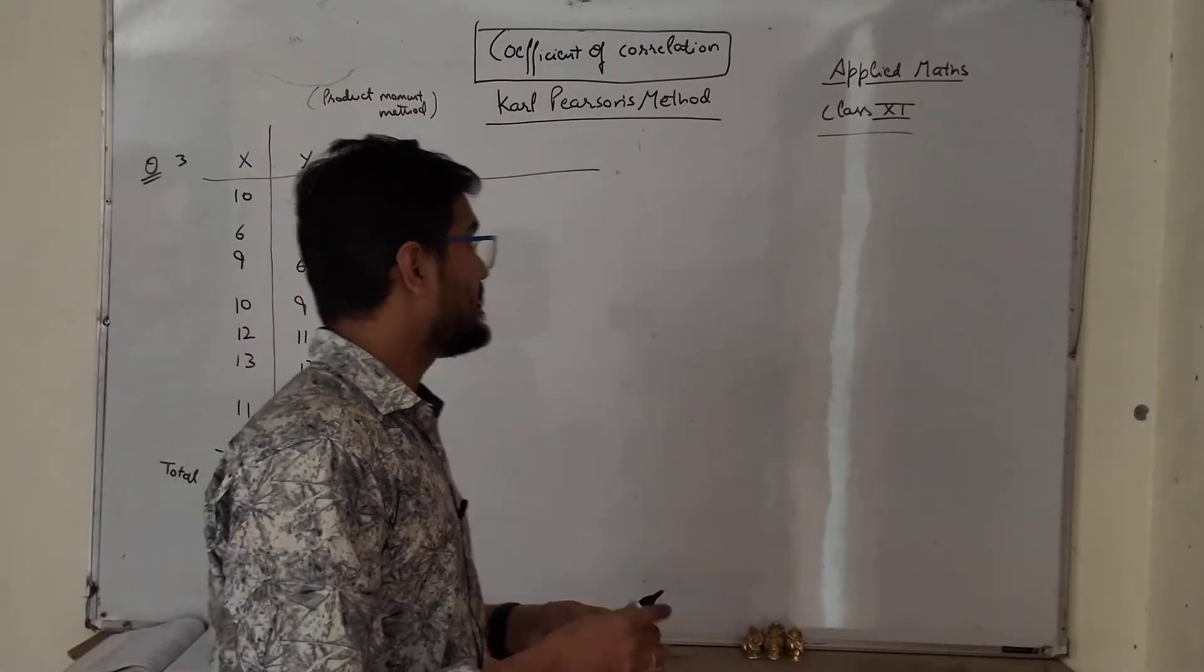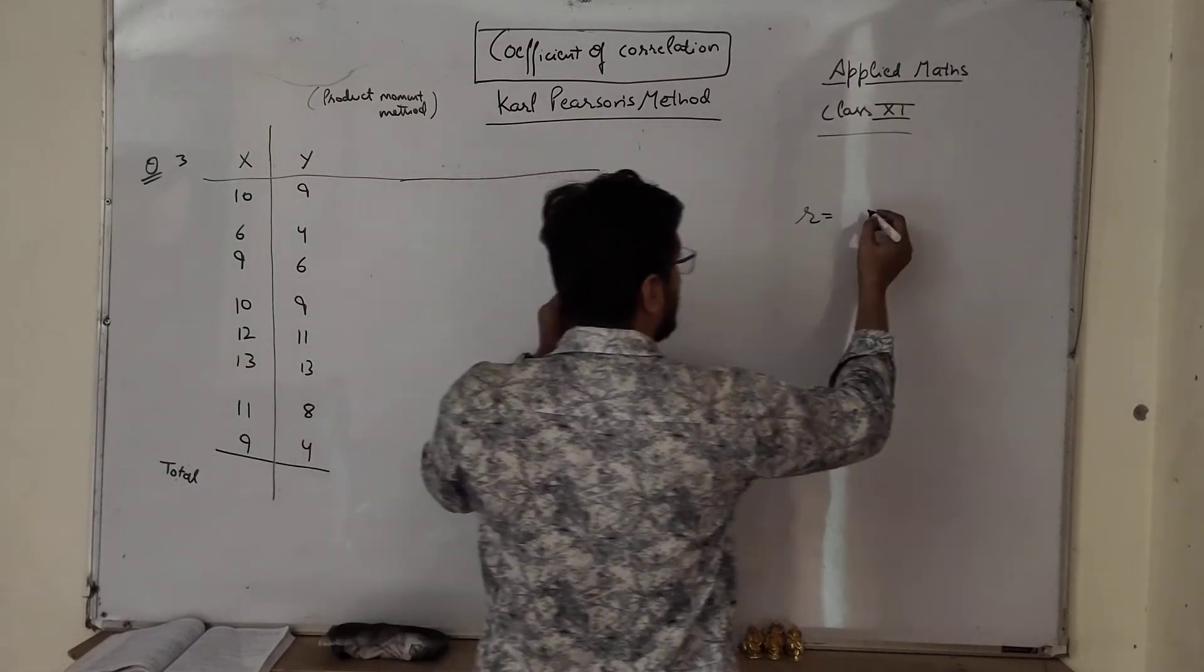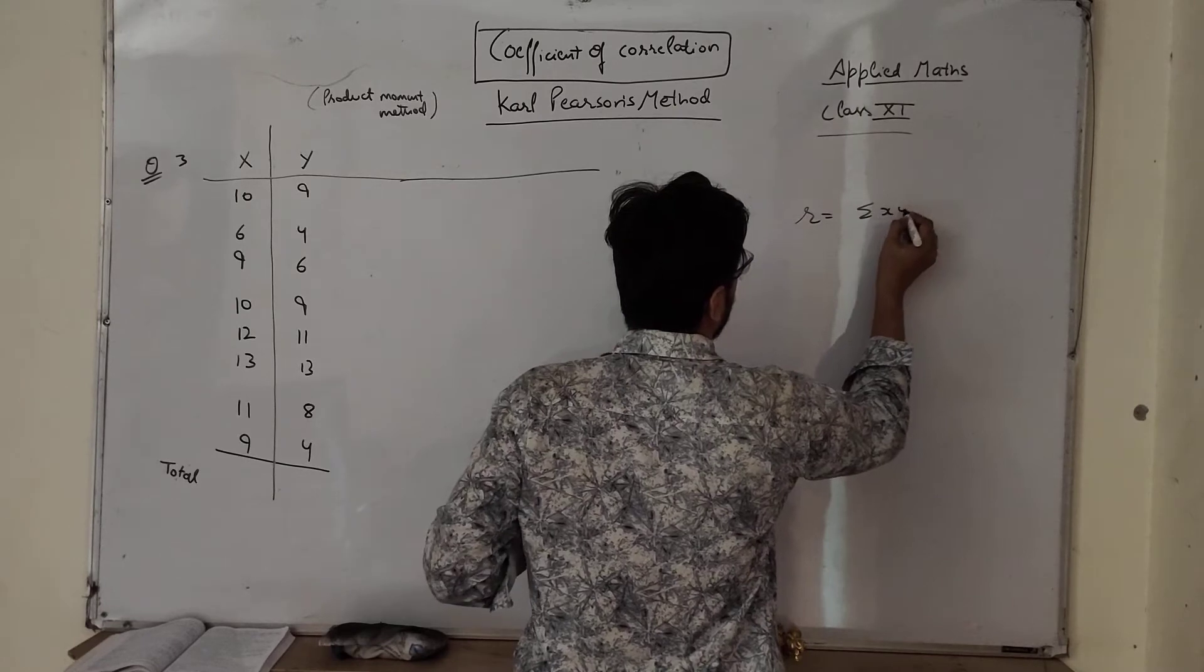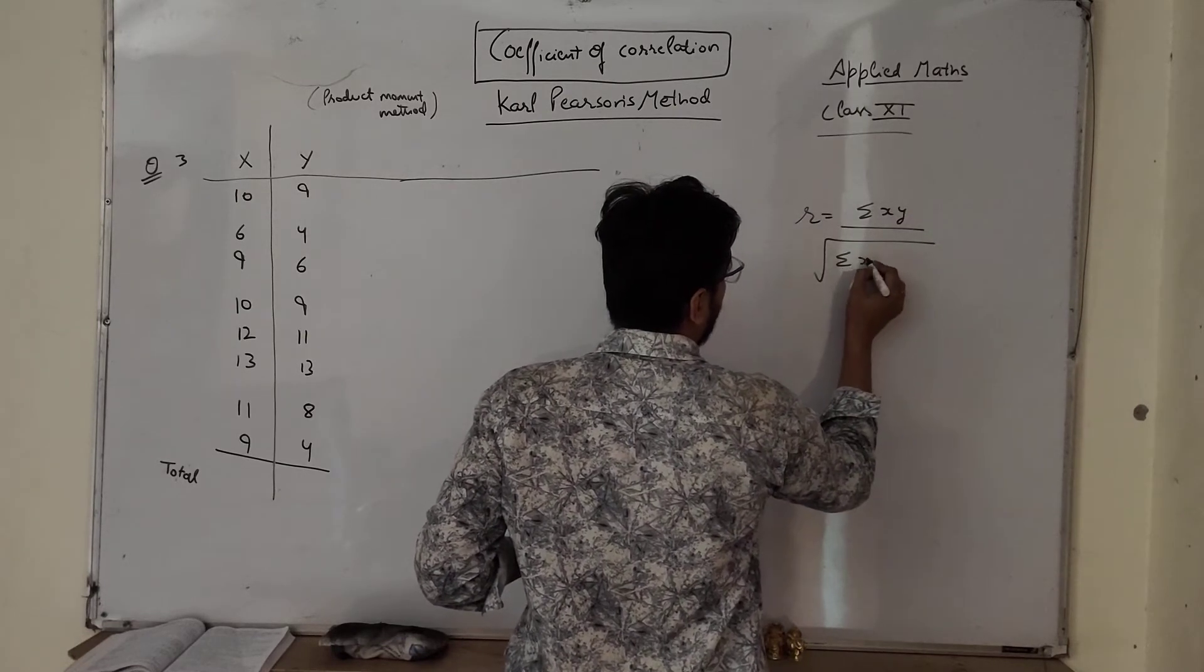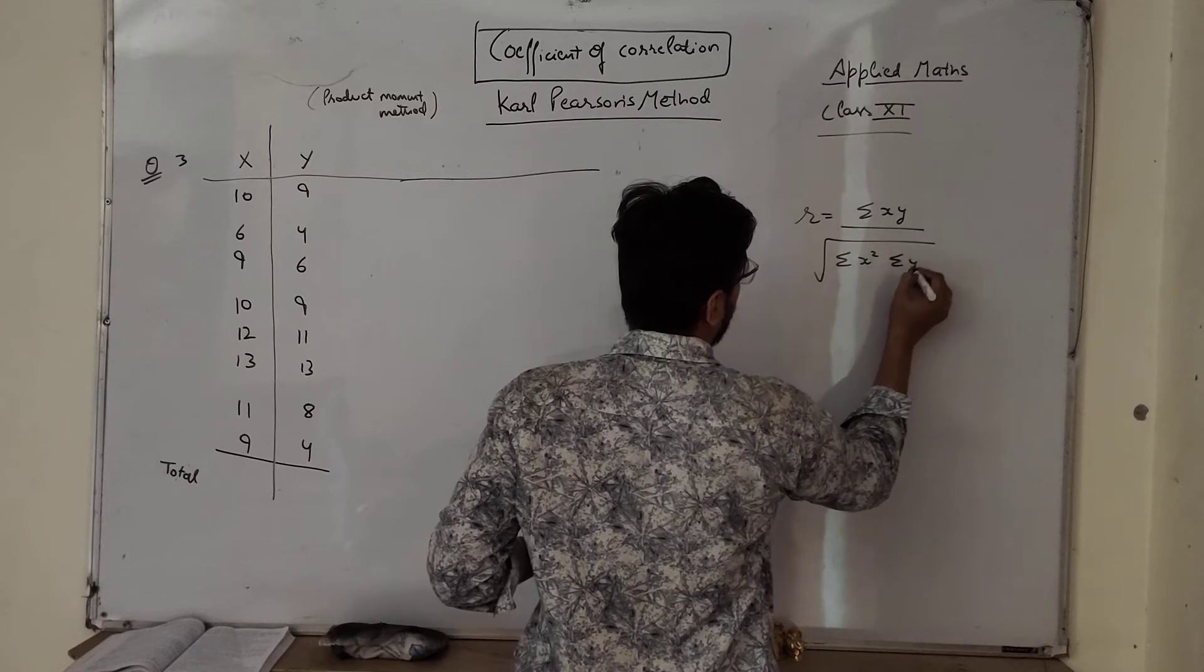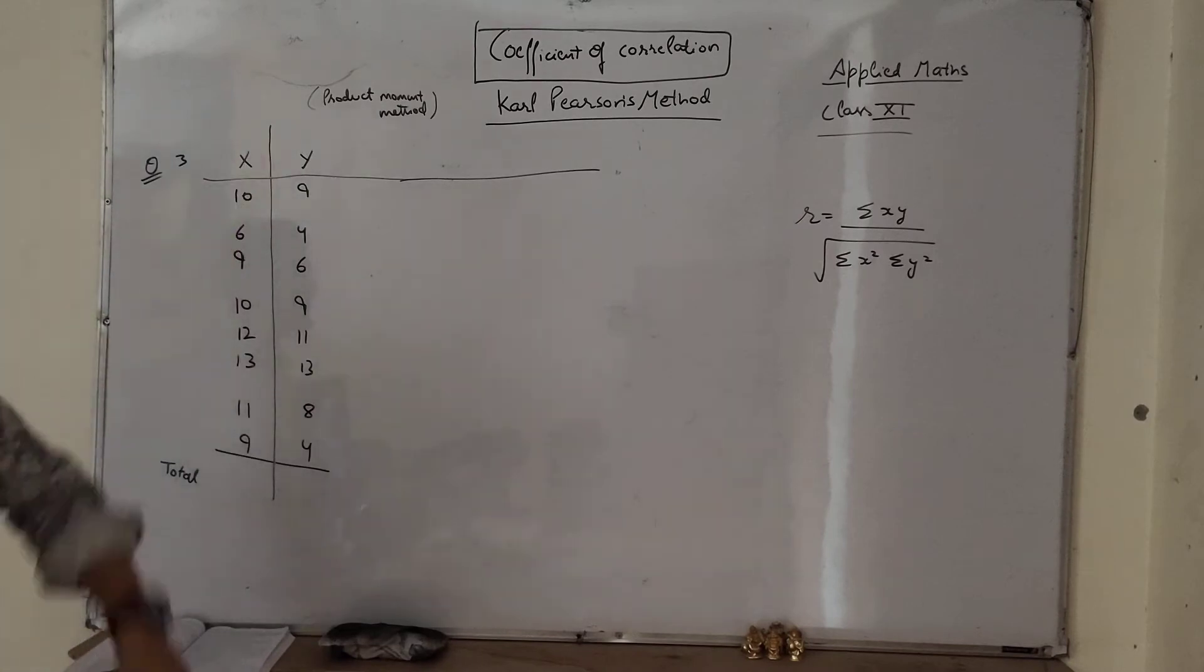The formula for it is r equals coefficient of correlation, sigma xy upon square root of sigma x squared sigma y squared. These are small x, y. This is capital X and capital Y.